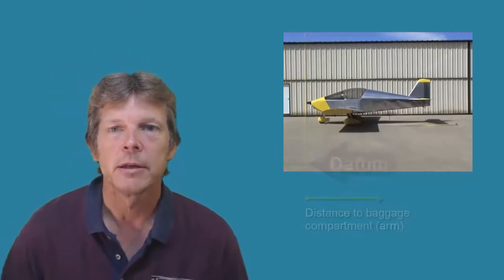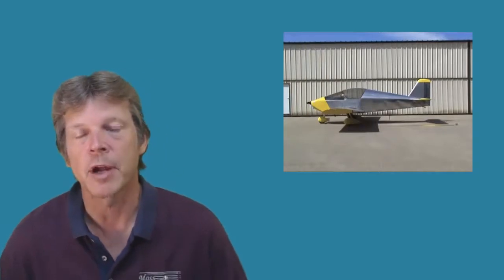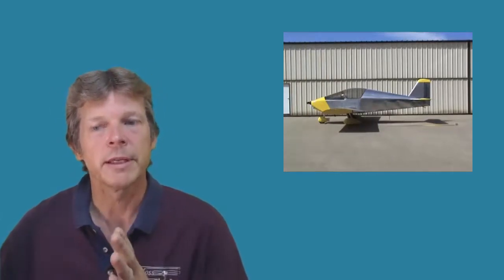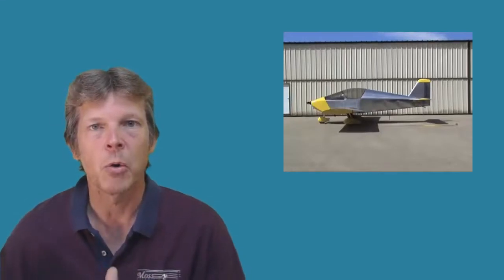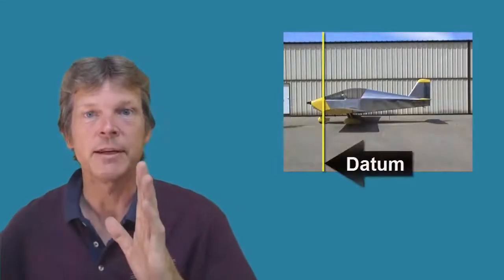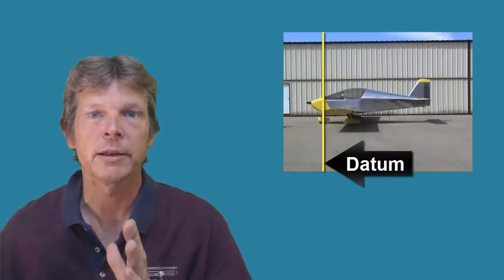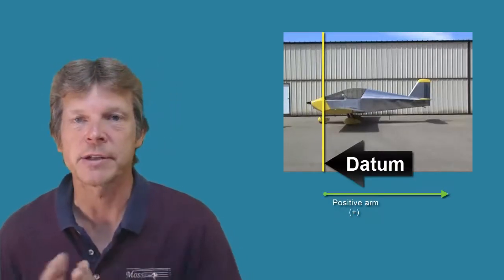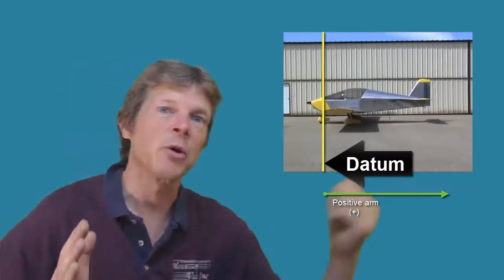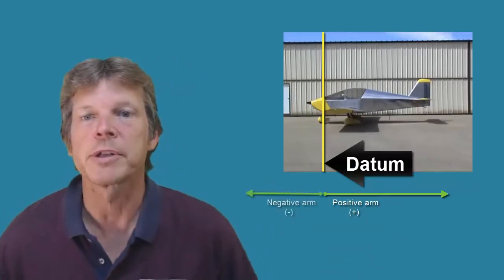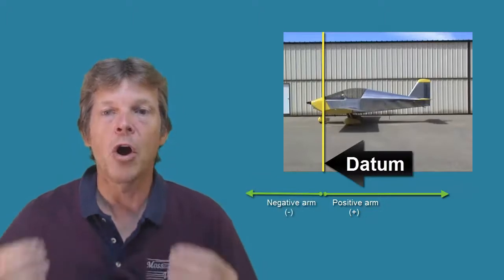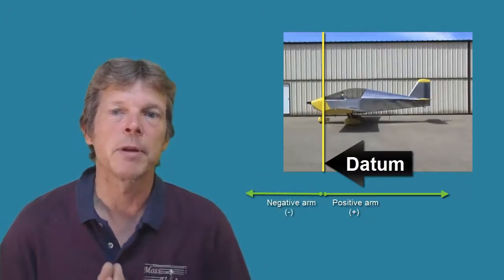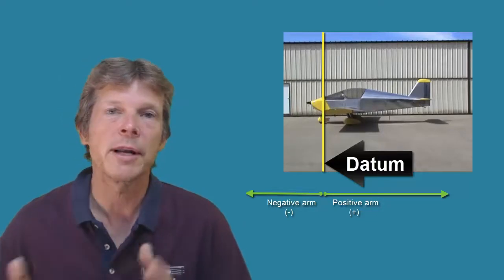Now arms can be displayed as either a positive number or a negative number. So in some situations, we put the zero line or the datum at the leading edge of the wing, and we measured towards the tail, that being a positive distance. And then we measured with a second tape measure going towards the propeller. That was a negative. So an arm is a horizontal distance. It can be displayed as either a positive number or a negative number.